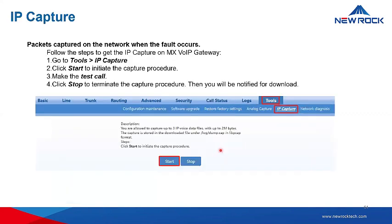In the event that some problems require a data capture, for example the voice problems analysis, we need to get the IP capture. So if the voice is too low or voice is only one side, please provide us the IP capture. Go to Tools, IP Capture, then Start, then make a test call. After that, stop the call to download the IP capture.